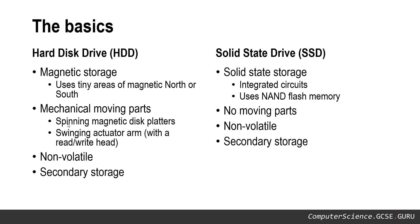We have our traditional hard disk drives. They are magnetic storage — a mechanical device with moving parts. It consists of spinning magnetic disc platters with actuator arms that swing across the disc surfaces. Those actuator arms have a read/write head at the end, able to deposit or read very small magnetic charges on the disc surface, representing binary data. Magnetic hard disk drives are non-volatile, meaning when the power is removed the data will be safe, which is important because they are secondary storage devices for long-term storage.